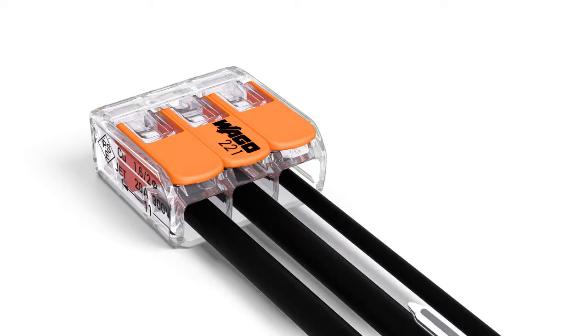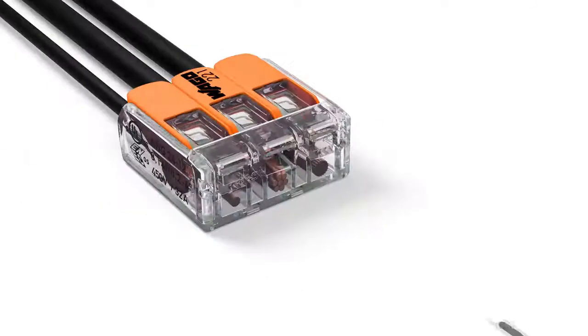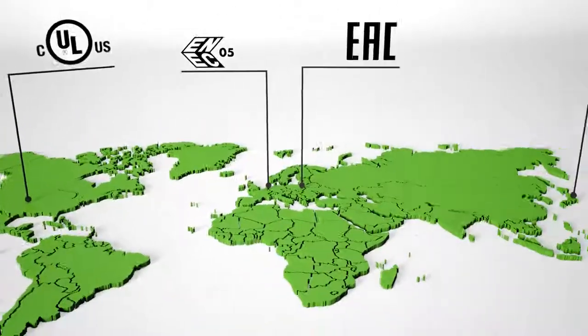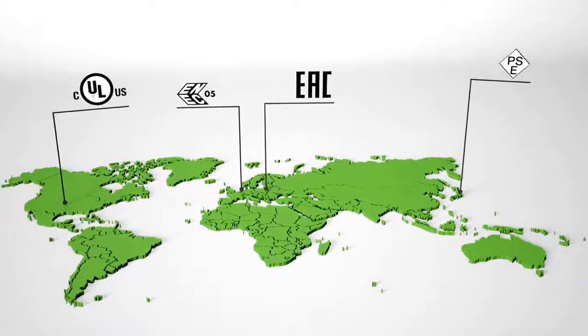Two easily accessible test slots, one in the conductor entry direction and one opposite this, provide easy test conditions even when installed. The 221 series supports many diverse applications beyond building installations.